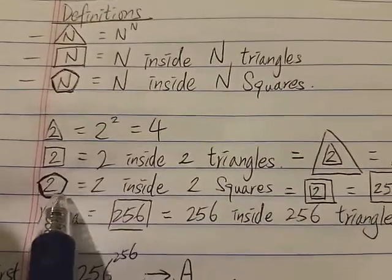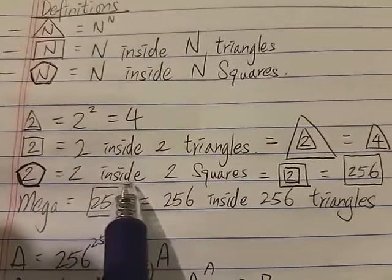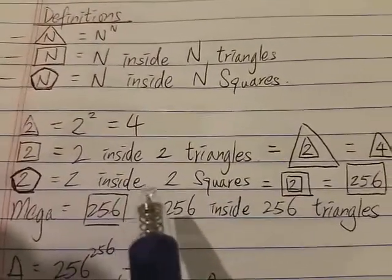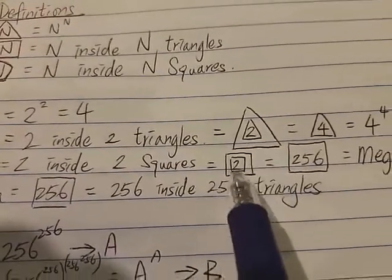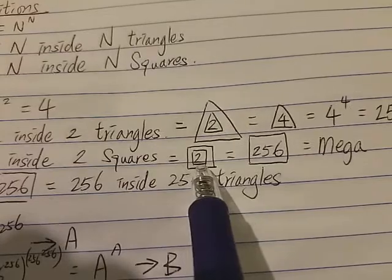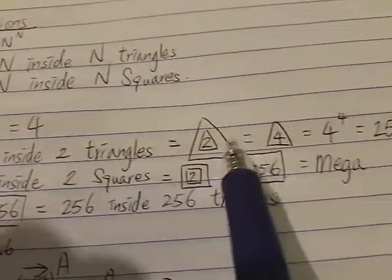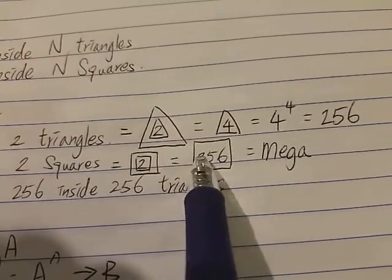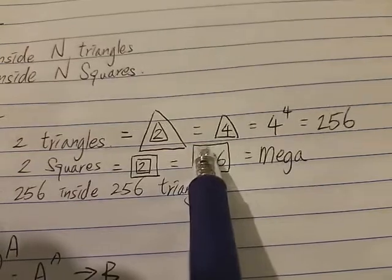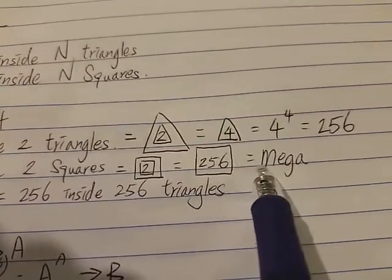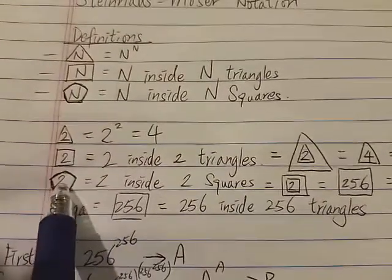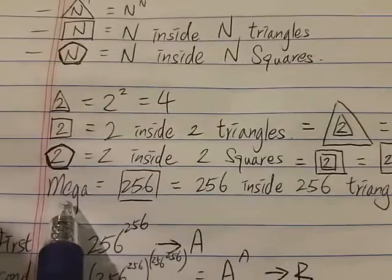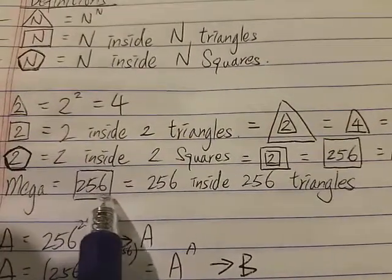Next, let's look at 2 in a pentagon. So 2 in a pentagon is 2 inside 2 squares. Since 2 in a square is 256, that means 2 inside 2 squares equals 256 in a square. And that's the definition of Mega — Mega is 2 in a pentagon, which equals 256 in a square.